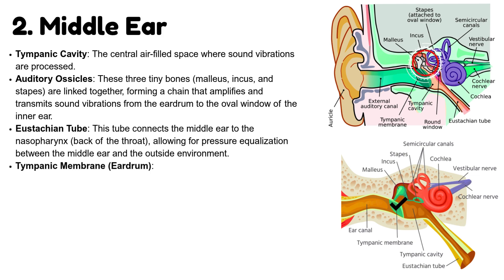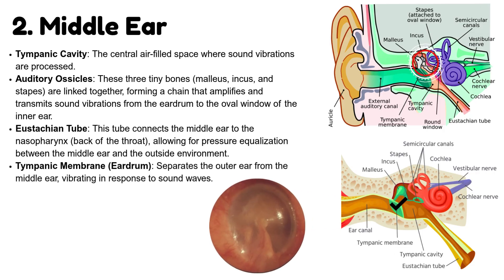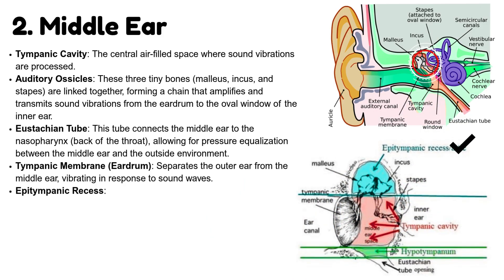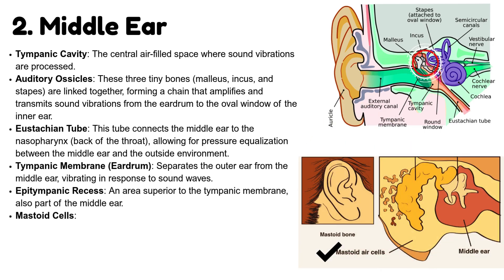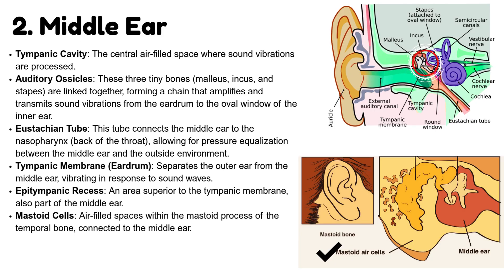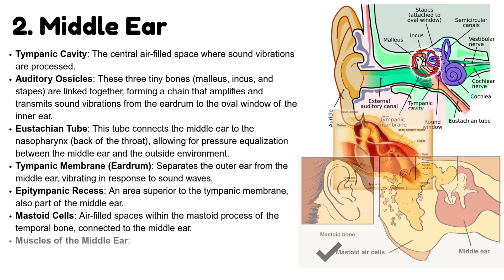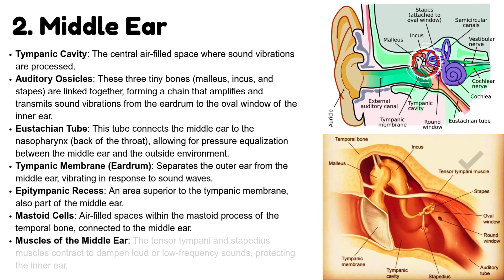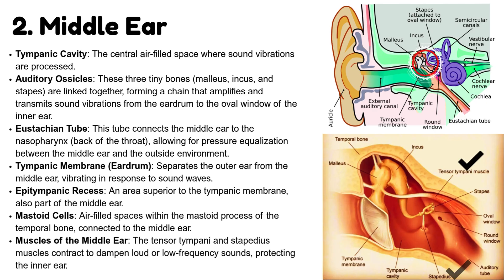Tympanic membrane, also known as the eardrum, separates the outer ear from the middle ear, vibrating in response to sound waves. Epitympanic recess — an area superior to the tympanic membrane, also part of the middle ear. Mastoid cells — air-filled spaces within the mastoid process of the temporal bone, connected to the middle ear. Muscles of the middle ear: the tensor tympani muscle and the stapedius muscle contract to dampen loud or low-frequency sounds, protecting the inner ear.